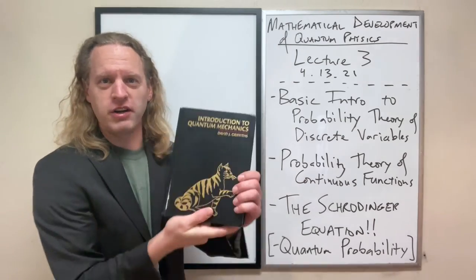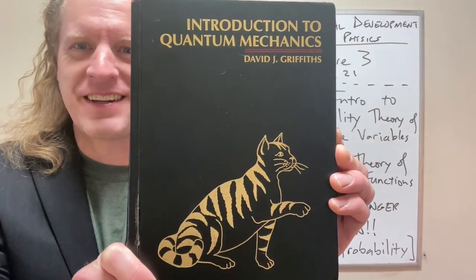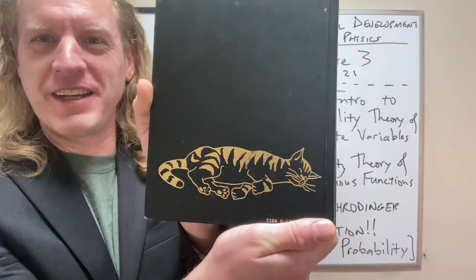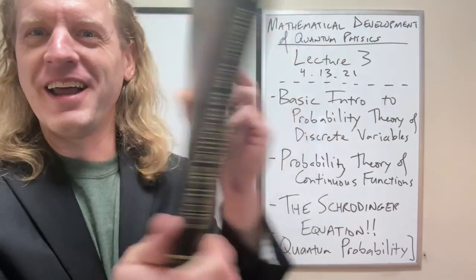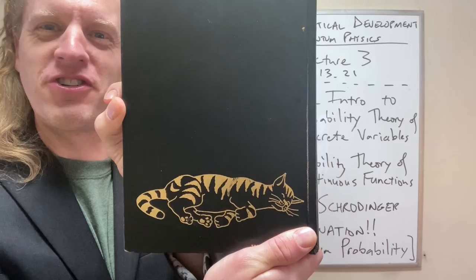This is the older edition, and it has an awesome cover, and you see, by the way, that's a cat on the front. You flip it, that's a cat that's dead, alive, dead. So insert Schrödinger's cat joke here.